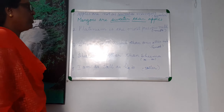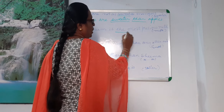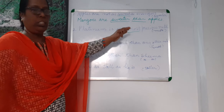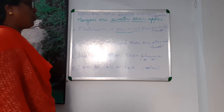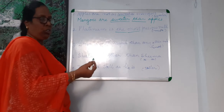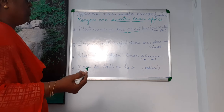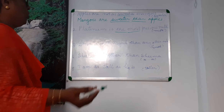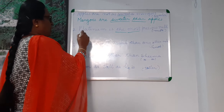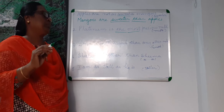Now the second sentence. This sentence has 'the' and 'most,' which tells us it is in superlative form. You are asked to rewrite it using 'more.' That means you have to use 'more' and 'than' along with the adjective. Here, the sentence says: Platinum is the most precious metal.